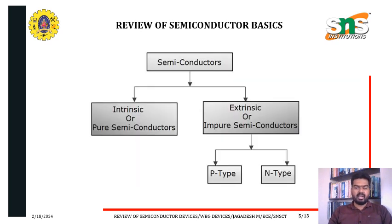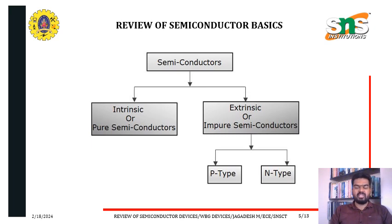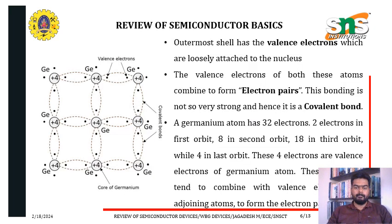Semiconductors have two classifications: one is intrinsic or pure semiconductor, and another is extrinsic or impure semiconductor. If you add some impurity to a pure semiconductor it becomes an extrinsic semiconductor. The extrinsic semiconductor further has two classifications: P-type and N-type.